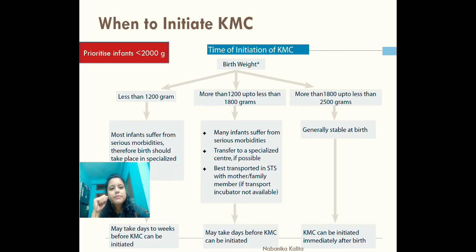For babies between 1.2 kg and 1.8 kg, they also suffer from certain comorbidities and their birth should also take place in a specialized center. If they are not born in a specialized center, they may be transported to one. During transportation, hypothermia must be prevented — through incubator transport, or if unavailable, skin-to-skin contact with the mother is the best preferred transport method. KMC may begin after a few days once the baby becomes stable.